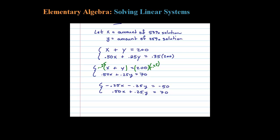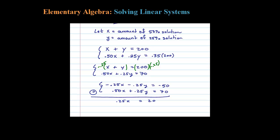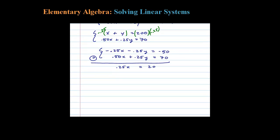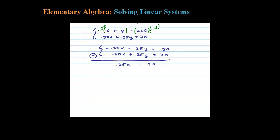Rewriting the second equation right under it, you can see the Y terms are lined up to eliminate. We have negative 0.25Y and positive 0.25Y. Adding the two equations together leaves us with 0.25X = 20. Dividing by 0.25, X equals 80. Remember, X was the amount of the 50% solution, so X equals 80 liters.